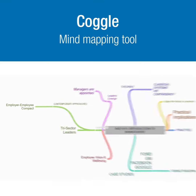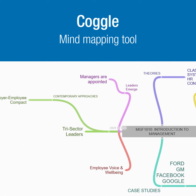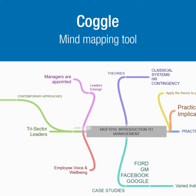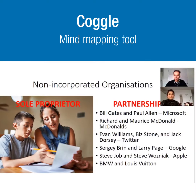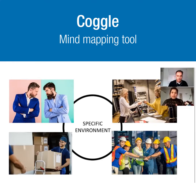Students are invited to use a software called Coglet, whereby they mind map the week's theories and case studies. The keen students then, by the end of the semester, can combine all of their mind maps and have a complete visual guide of the entire unit.